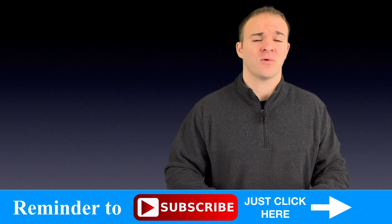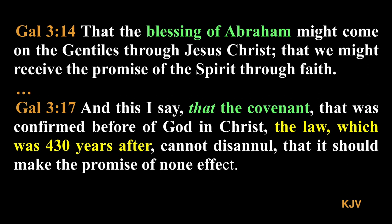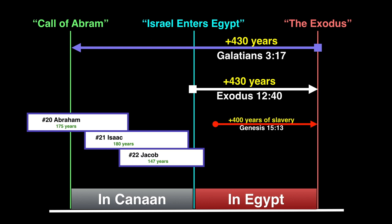But how do we reconcile those earlier verses that say that it was 400 and 430 years that they would be in Egypt? Well, Paul actually helps us out in Galatians 3 by saying, That the blessing of Abraham might come on the Gentiles through Jesus Christ, that we might receive the promise of the Spirit through faith. And this I say, that the covenant that was confirmed before of God in Christ, the law, which was 430 years after, cannot disannul that it should make the promise of none effect. So, Paul is saying that the Mosaic law came 430 years after the Abrahamic covenant.